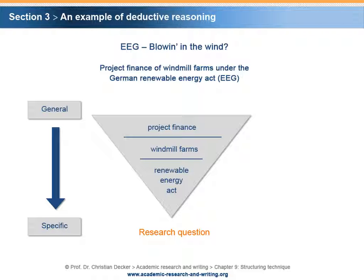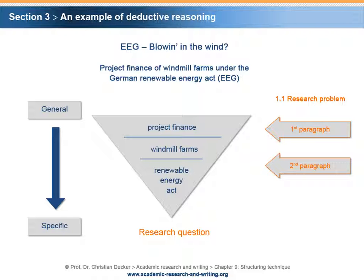How is this example of deductive reasoning linked to the text structure of the subchapter Research Problem? The answer is quite simple. For each major component, as well as for the research question, an individual paragraph is needed. In the first paragraph, the term Project Finance is addressed. In the second paragraph, Windmill Farms are introduced. The third paragraph is about the Renewable Energy Act. Finally, there has to be a paragraph in which the research question is defined.